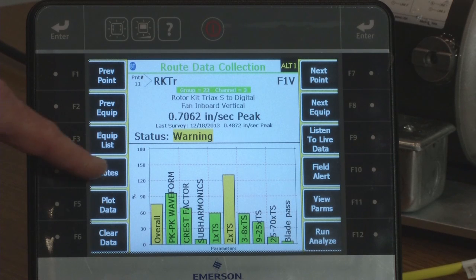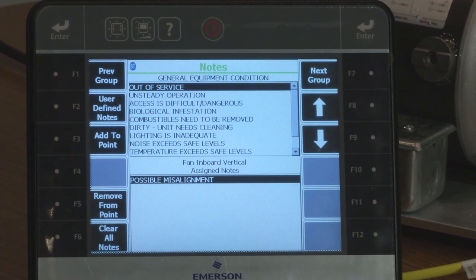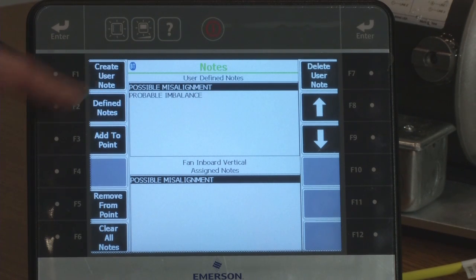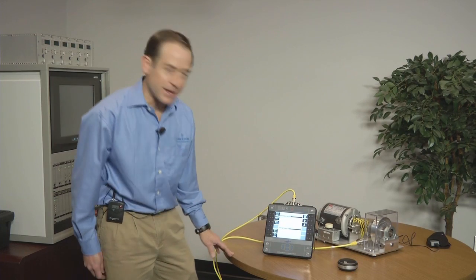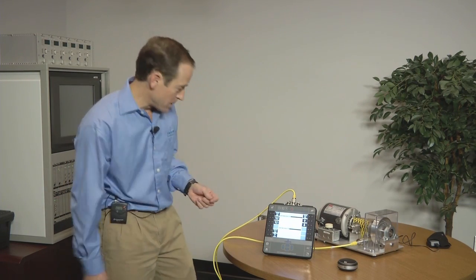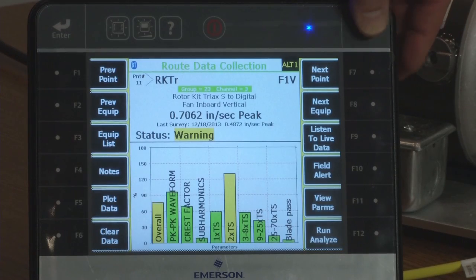And the 2140 has a button called notes. And I like user defined notes, customized notes. And what I am going to do is I am going to say well that is a two times under basic vibration analysis. That is probably a misalignment. So I am going to select possible misalignment and I am going to add that note to that point so that later on when I come back I can be reminded of what I saw. Hit enter.